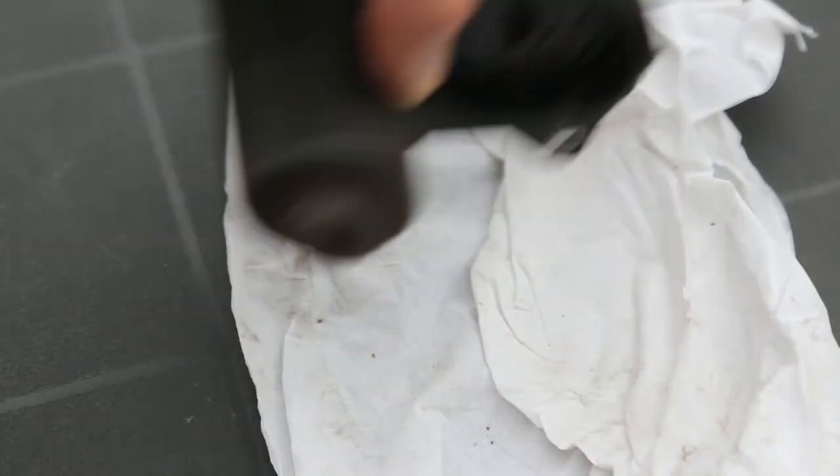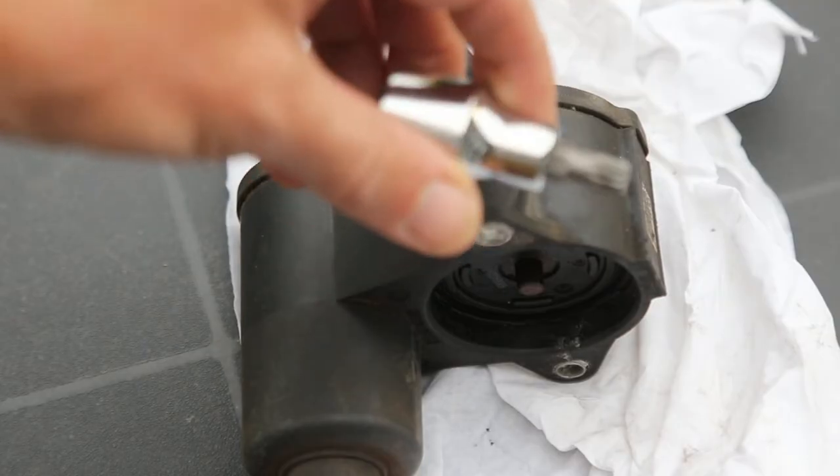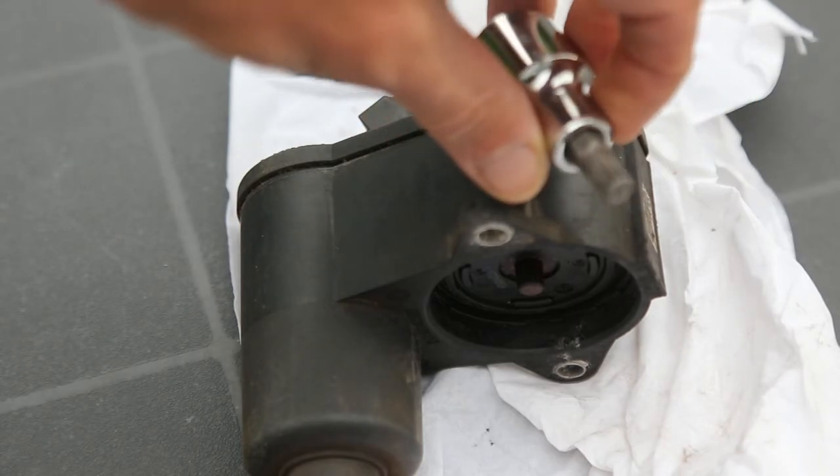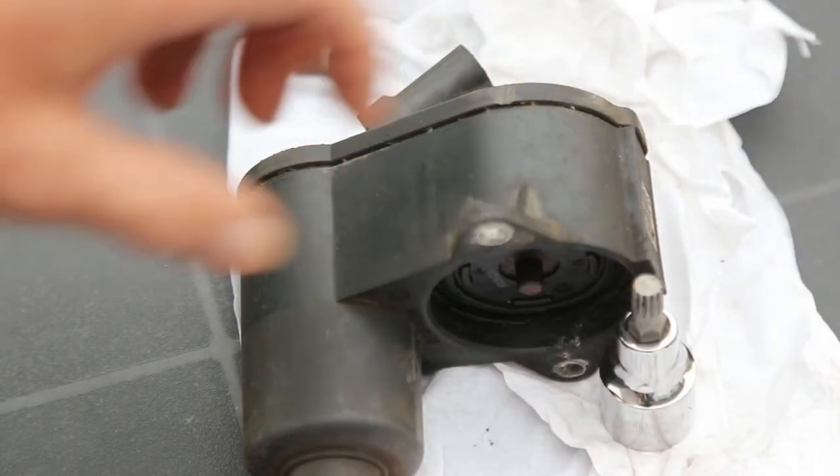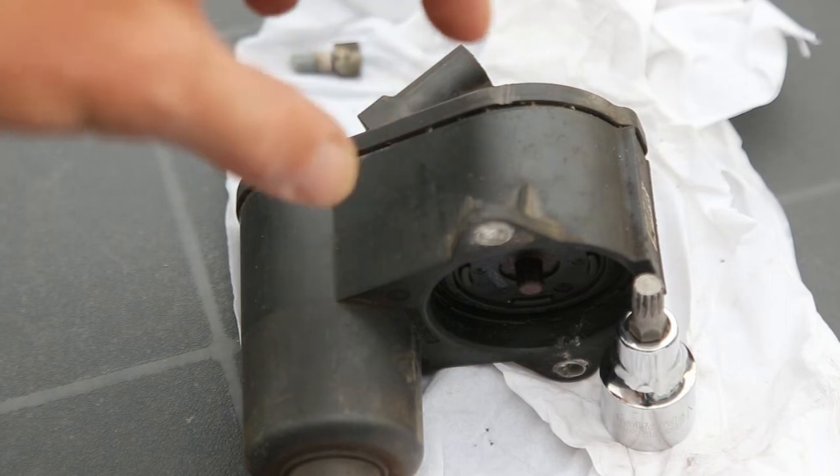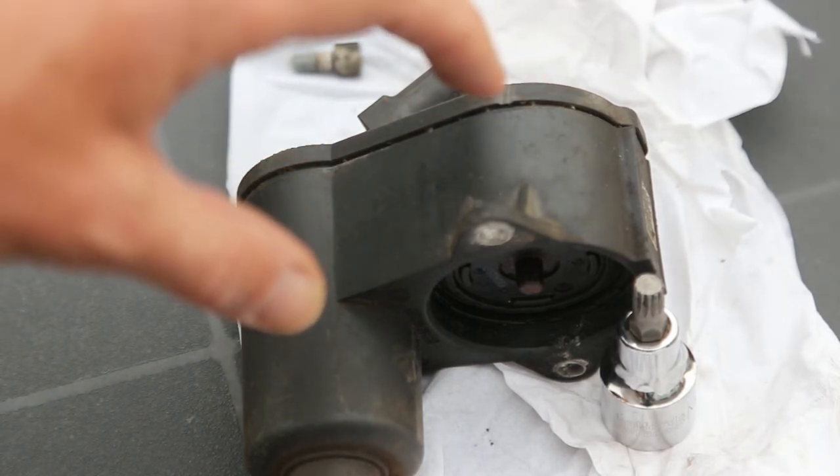And if this has locked the caliper on so you can't actually drive the car, then you can actually use an M8 spline to be able to turn the caliper manually so that it releases the handbrake from the car and you will then be able to drive the car.